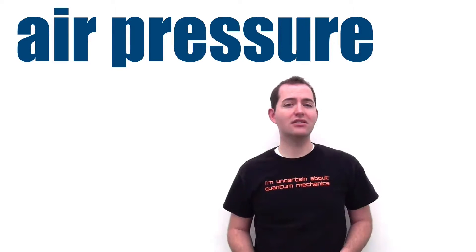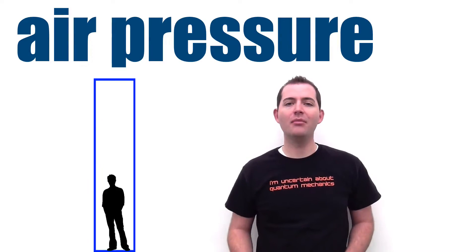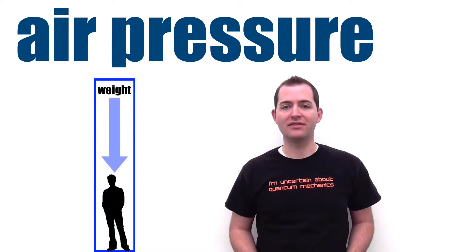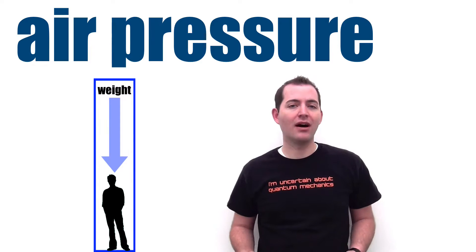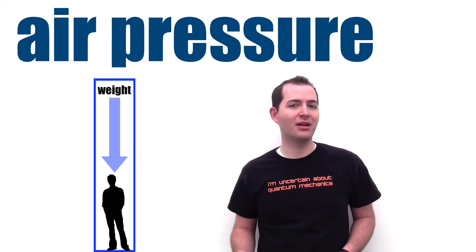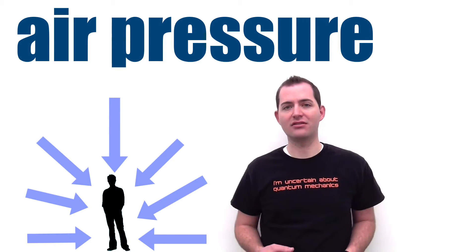Air pressure is the force exerted on the surface of the Earth by the atmosphere. It's common to refer to air pressure as the weight of the atmosphere caused by gravity. While this is helpful in understanding the idea of air pressure, it's important to point out that it pushes in all directions, not just straight down.